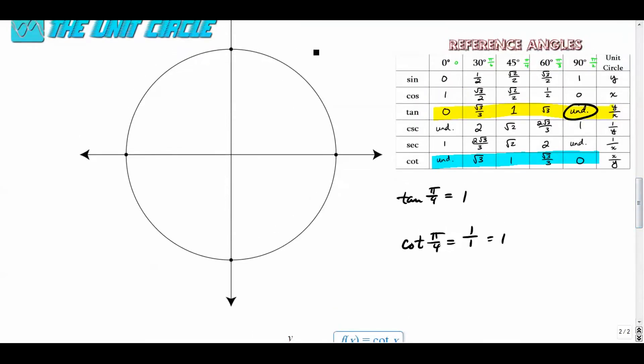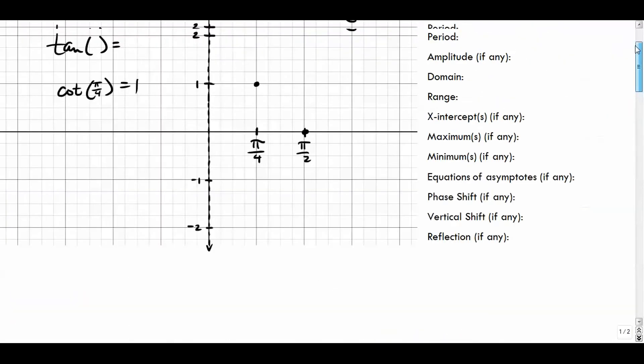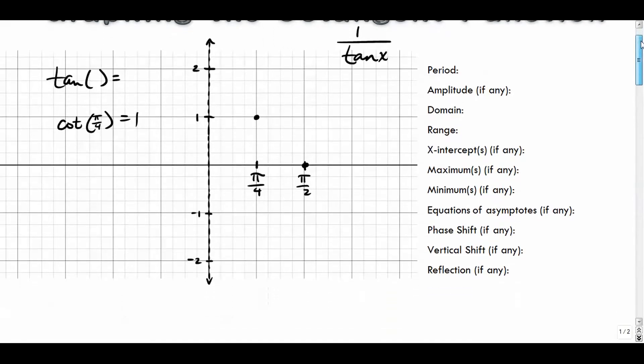And again, cotangent is defined as the flipped over version of tangent. It's one over tangent. Well, that means that it's cosine over sine. So the cosine we said was the x value in the unit circle and the tangent is the y value. So we are just flipping over the tangent - one divided by zero is your cotangent right here. Okay, so those are the two points that we kind of started with.